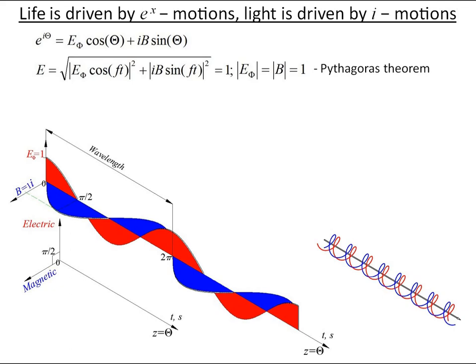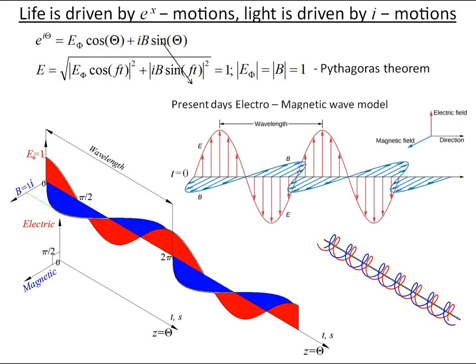Except for one deviation from present theory: at moment t equals zero, magnetic and electric fields have zero value. That is not true. At the moment zero, electric field has maximum value.